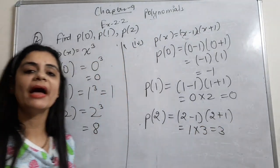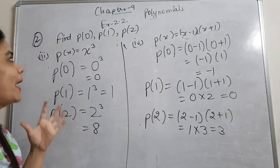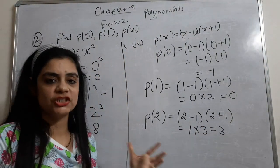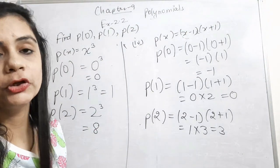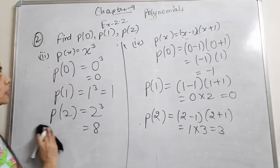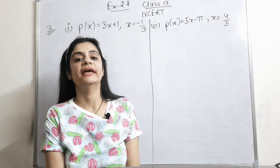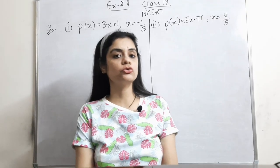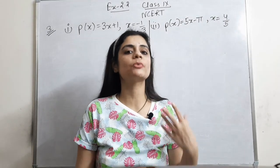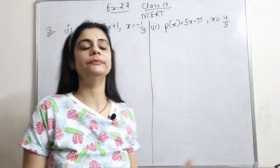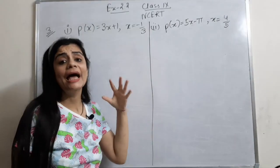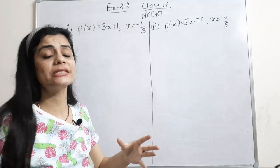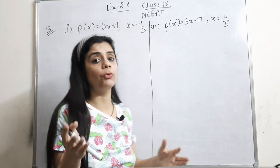These were my four parts of question number 2. Now I am going to start question number 3. We move on to the next question which is question number 3. This is my question and the question says, as you can see in your books: verify whether the following are the zeros of the polynomial.